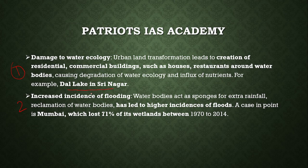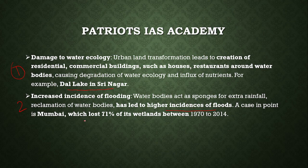Second, increased incidence of flooding. Water bodies act as sponges for external rainfall. Reclamation of water bodies has led to a higher incidence of floods. For example, Mumbai lost 71% of its wetland between 1970 and 2014.